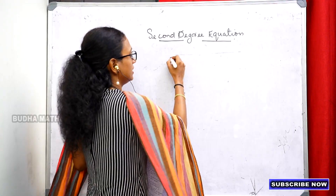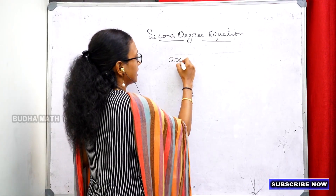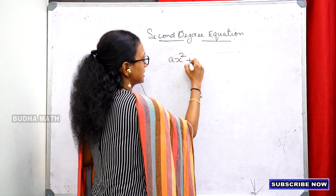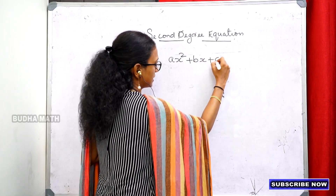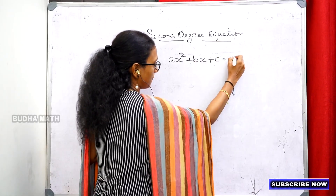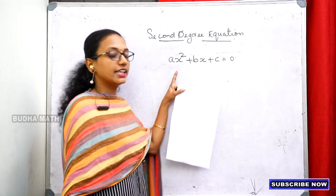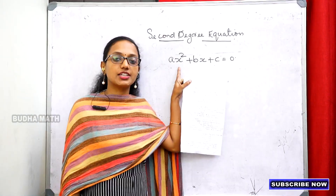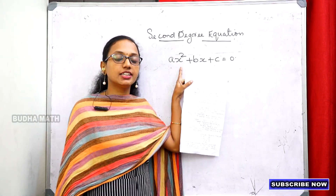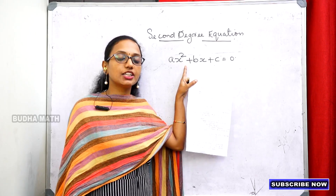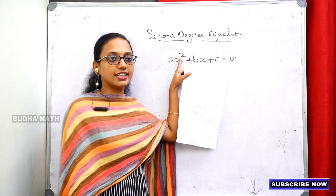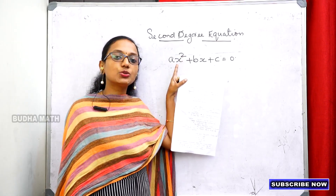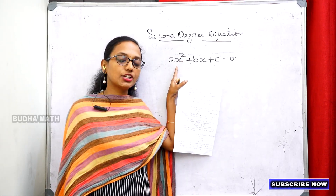Ax squared plus bx plus c equals zero. This is the second degree equation.